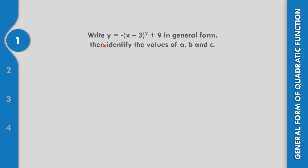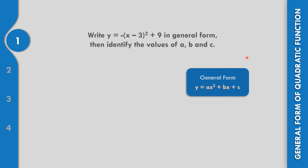In example number 1, write y equals negative the quantity x minus 3 squared plus 9 in the general form: y equals ax squared plus bx plus c. First, we copy the equation and distribute the square of the binomial. x times x is x squared, and x times negative 3 is negative 3x, times 2 gives negative 6x.